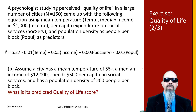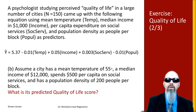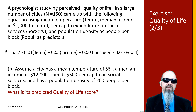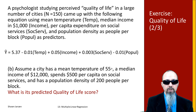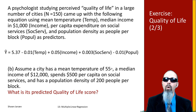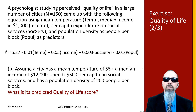Let's see if we can figure out a predicted value. Given the same equation, consider an example city with a mean temperature of 55 degrees Fahrenheit, a median income of around $12,000, spending about $500 per capita on social services, and a population density of 200 people per block. What is our predicted quality of life score? Go ahead and pause the video to try it out.